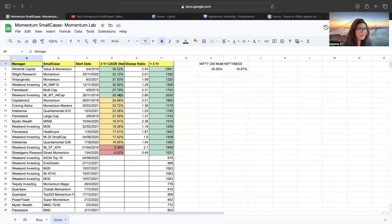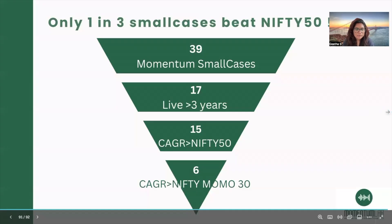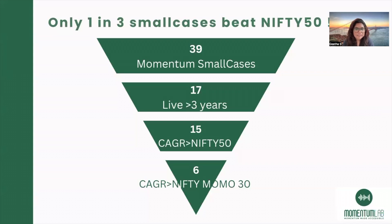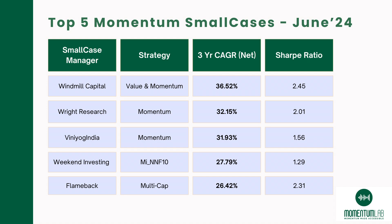Coming to the Nifty 200 Momentum 30 category, we have six small cases that have beaten the CAGR of the Nifty 200 Momo 30 index, up from five last month. So there is an increase in the number of small cases beating the indices. To recap: 39 momentum small cases considered, 17 live for more than three years, 15 that have beaten Nifty 50's CAGR, and six that have beaten the Nifty 200 Momo 30 index.